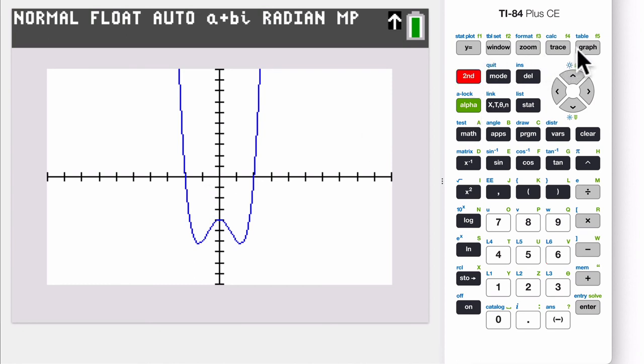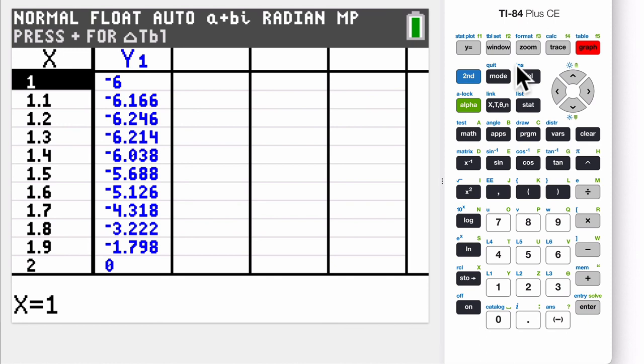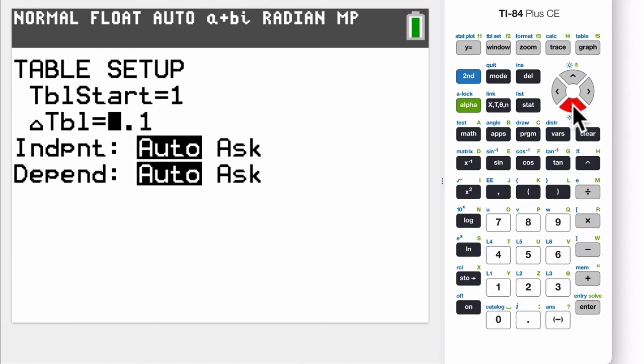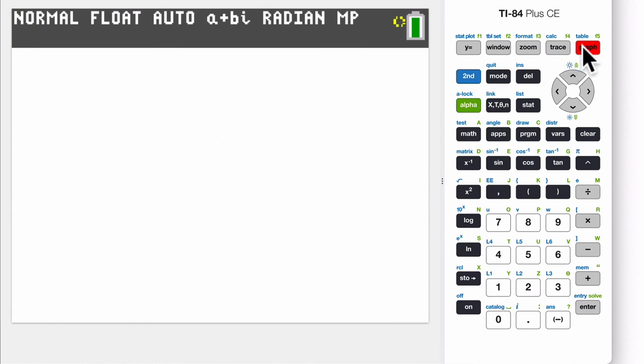But if you go to the table, you can also see, let's look at some opposite values. Now I have a weird set right here. Let me fix that second window. I want to go up. This tells me what to go up by, what the increments are. I'm going to go up by ones.